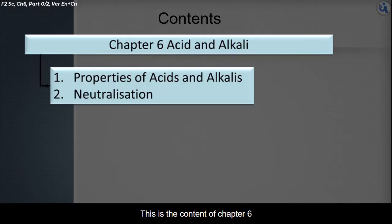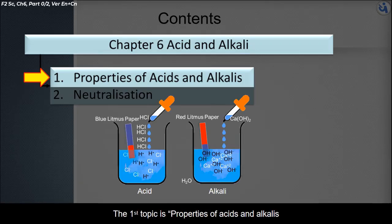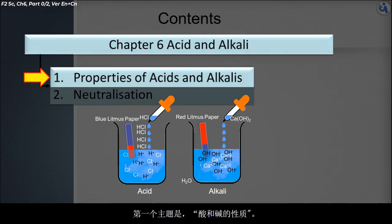This is the content of Chapter 6. Chapter 6 consists of two topics. The first topic is Properties of Acids and Alkalis, in which we will learn the definition of an acid and alkali. 第一个主题是酸和碱的性质。在此，我们将了解酸和碱的定义。